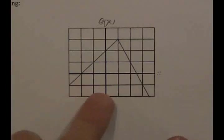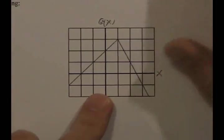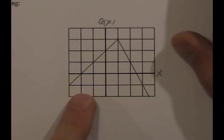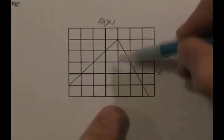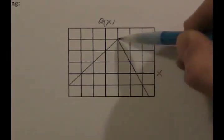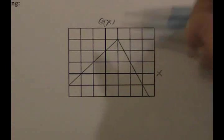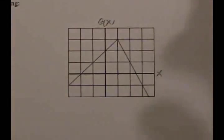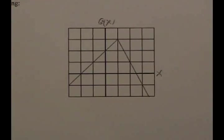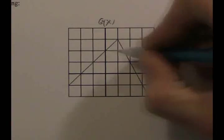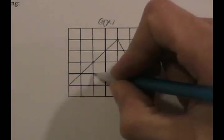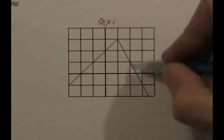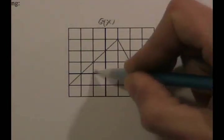The last problem uses a graph of g(x). Solve g of x equals 4: looking at the graph, nowhere is g of x equal to 4 — the highest it goes is 3 — so the answer is no solution. Solve g of x equals 1: g of x equals 1 at two points, at x equals 2 and x equals negative 1. So g(2) = 1 and g(-1) = 1.